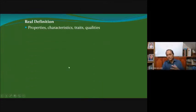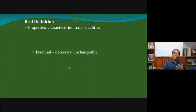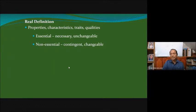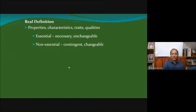The real definition defines the object itself, and when we give a real definition we enumerate the properties, characteristics, traits, features, and qualities of the object. Properties or characteristics can either be essential or non-essential. 'Essential' means necessary or unchangeable — it is an integral part of the object, so if we remove the essential properties the object will no longer be the same. Non-essential properties are contingent or changeable — we can change them and the object will remain the same.